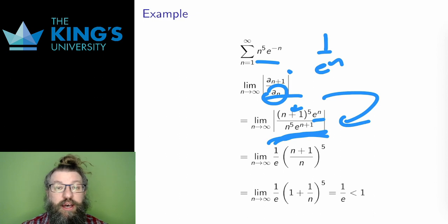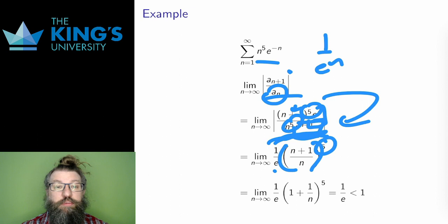Then I can simplify. I have e^n in the denominator, and all but one of these cancel with the e^n in the numerator. The n+1 and n are both inside a power of 5, so I can write them inside a single bracket: (n+1)/n to the power of 5, and then I can simplify this, bringing the limit inside.